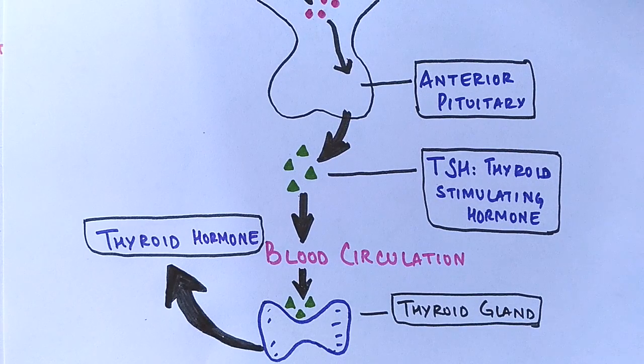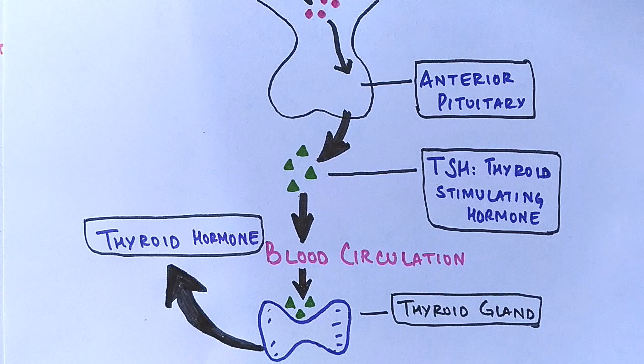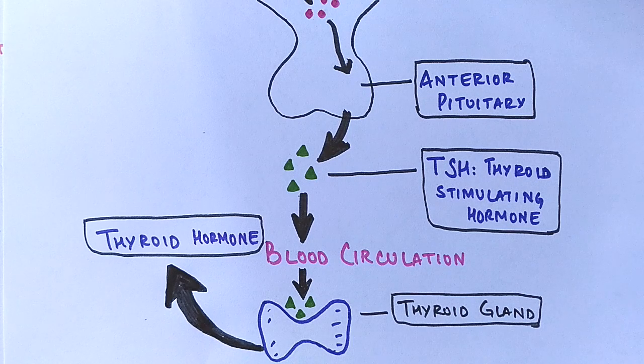T4, thyroxine hormone, has a slight effect on metabolism. Therefore T4 is converted to triiodothyronine, the T3 form, which is the active hormone that stimulates metabolism.